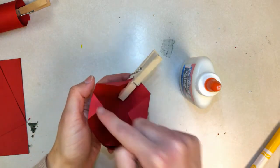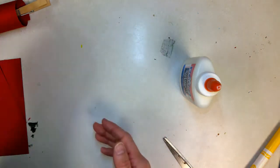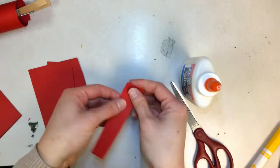You can put glue on these tabs and then glue it down like that to create crimps.